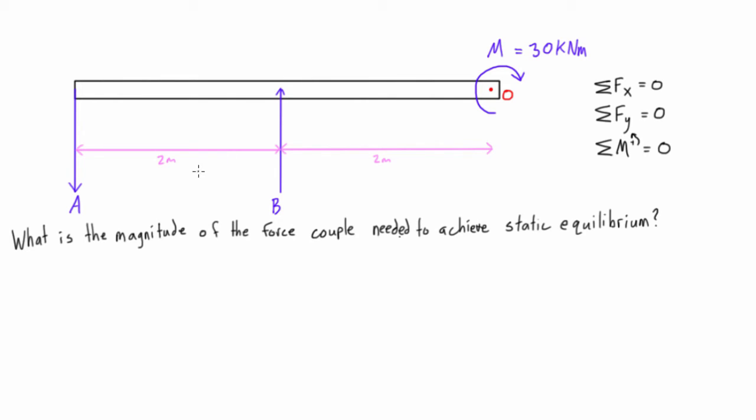So basically what we want to do is we want to figure out the magnitude that we can give A and B so that the moment they cause, they create, will just cancel out this 30 kilonewton meters that's trying to rotate it in the other direction. So really, when we're looking here at the sum of moments equaling zero, so we have the sum of moments must equal zero.